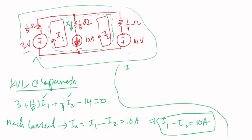So if I solve for I₁, I₁ is just I₂ plus 10. Then I can go back to this equation here and plug that expression here. So I get 3 plus 1/5 times I₁, I'm gonna write I₂ plus 10, plus 1/4 I₂ minus 14 equal to zero.